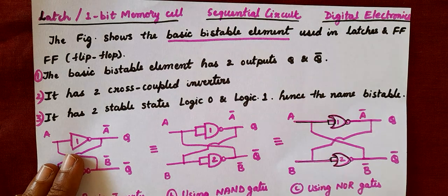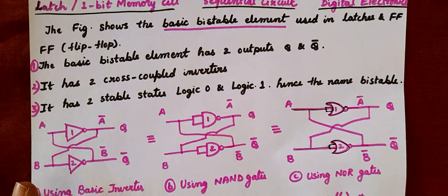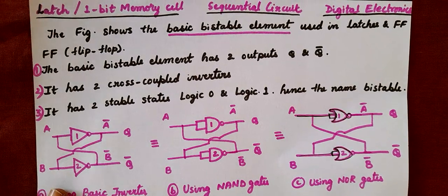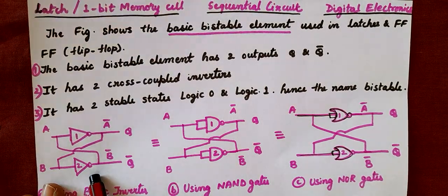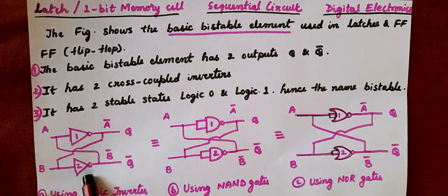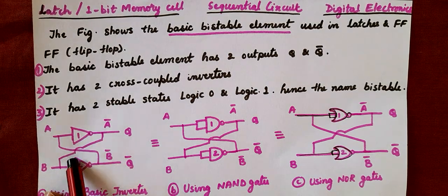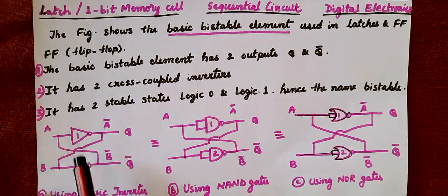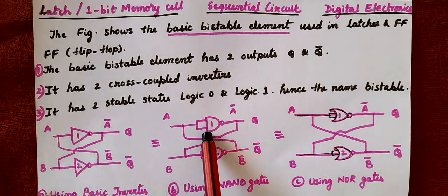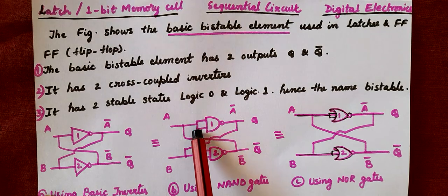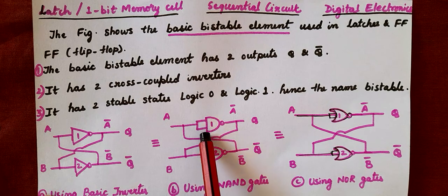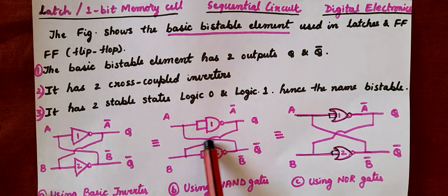Let us start the working of a latch. A latch is primarily comprising of two cross-coupled inverters. An inverter means a NOT gate. We can draw the NOT gate using a NAND gate — when we join both the inputs of the NAND gate together, it becomes a NOT gate. So a latch is also called cross-coupled NOT gate.